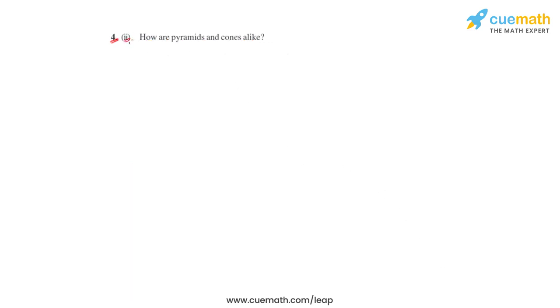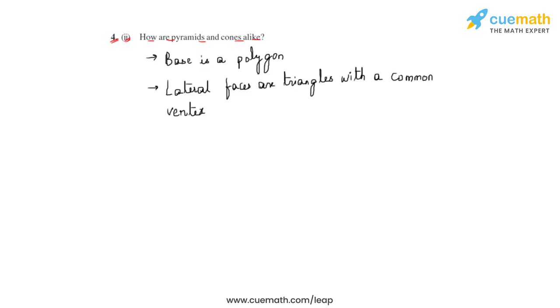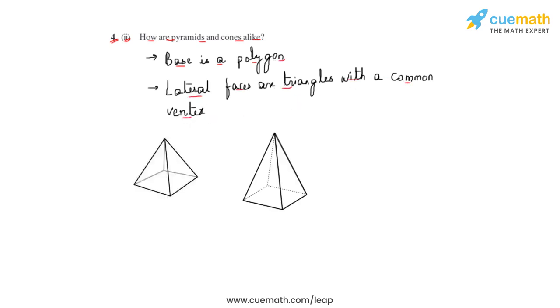Now in the second part of question number 4, we will have to observe how pyramids and cones are alike. To understand this, let us list out the properties of a pyramid first. A pyramid is a polyhedron whose base is a polygon, and the lateral faces of a pyramid are triangles with a common vertex. Let us take a few examples of pyramids to understand these properties.